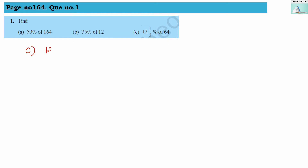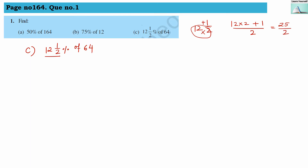Numerical C: 12 and 1/2 percent of 64. Here a mixed fraction is present. Let us convert it into an improper fraction: 12 multiplied by 2 plus 1, all divided by 2. That gives 24 plus 1 equals 25, divided by 2. So our fraction is 25/2 percent of 64.